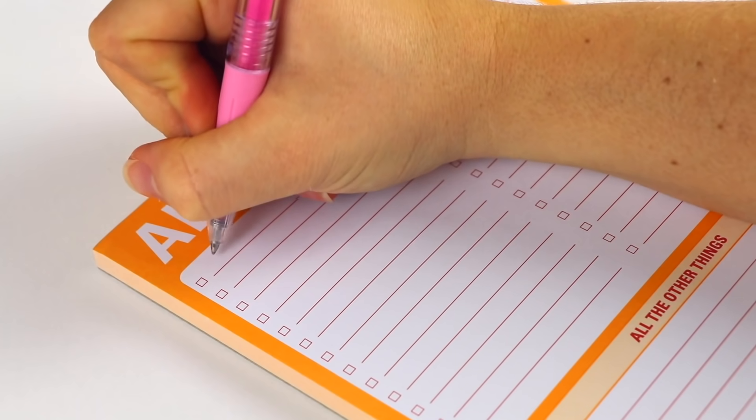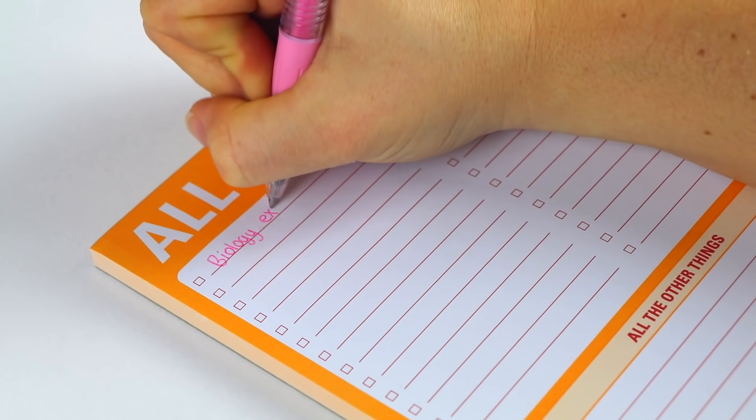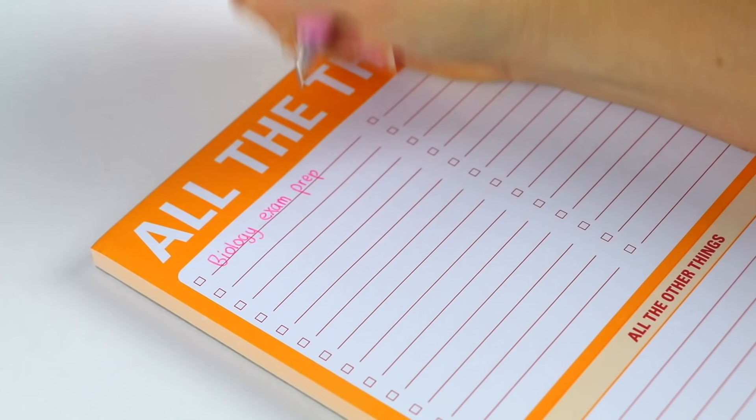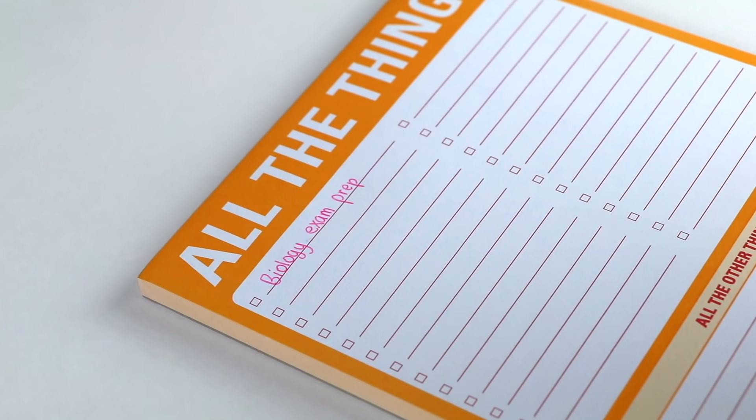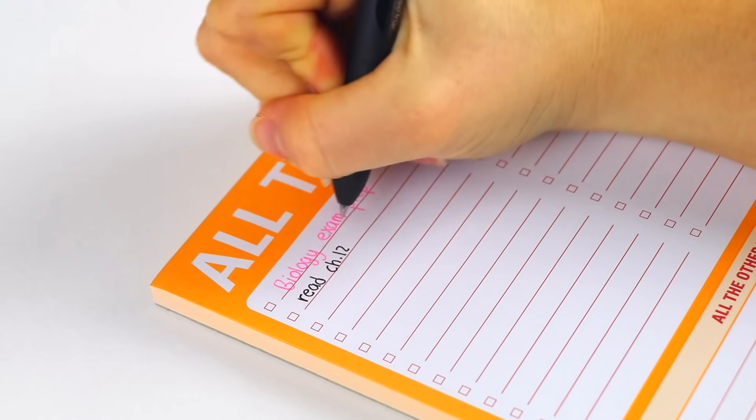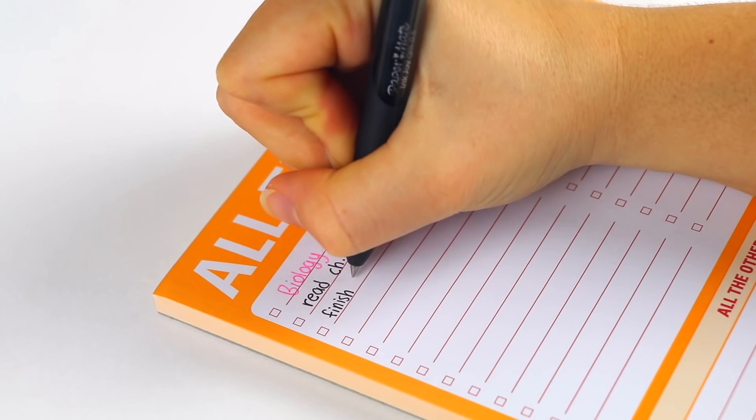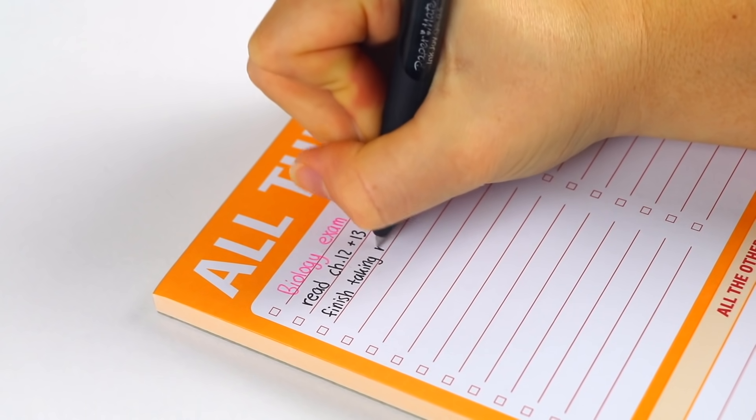Obviously when you're preparing for tests the steps will be different than just answering questions on an assignment. Once you've written it out, then all you need to do is sit down and get started. The part of sitting down and just getting started is the most difficult part because as procrastinators that is exactly the thing that we avoid the most.